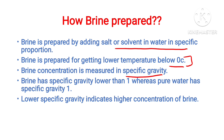Pure water has a specific gravity of 1. Brine has a specific gravity less than 1. A lower specific gravity indicates a higher concentration of brine. For example, if the specific gravity of the solution is lower, like 0.88 or 0.9, this indicates the brine has a higher concentration. For getting much lower temperatures, a higher concentration of brine is needed, which has a lower specific gravity.